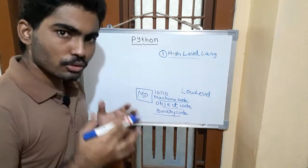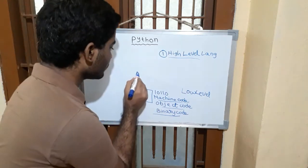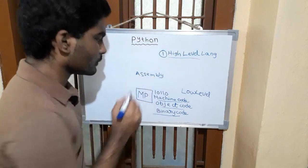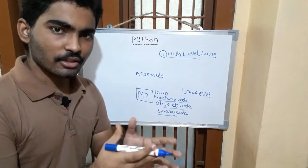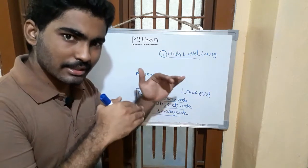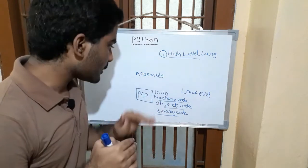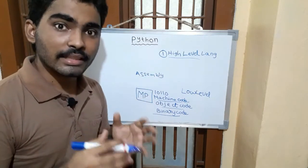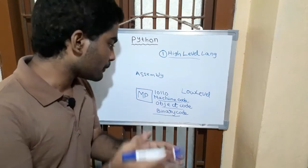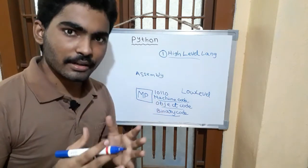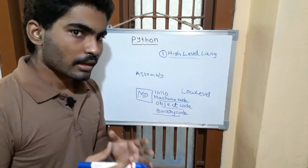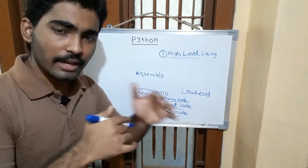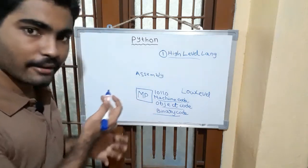Now let's talk about assembly level language. In assembly level language, there are some English-like words, and at the same time there is binary code — it is a combination of both. It is not easy to use, but when compared to machine code, it is easier. So it is a middle-level language.